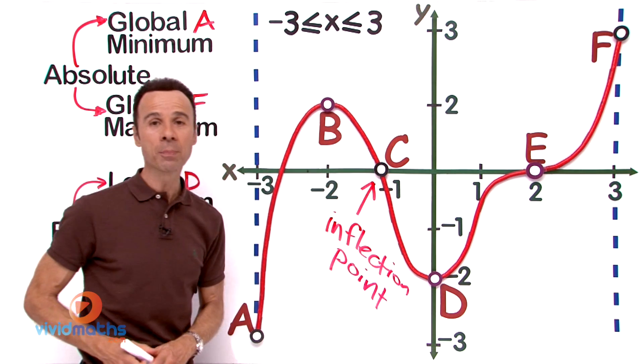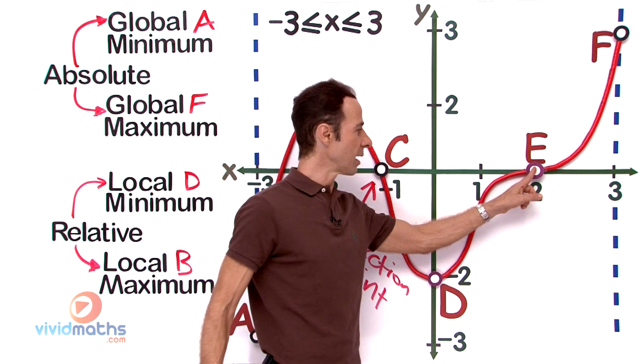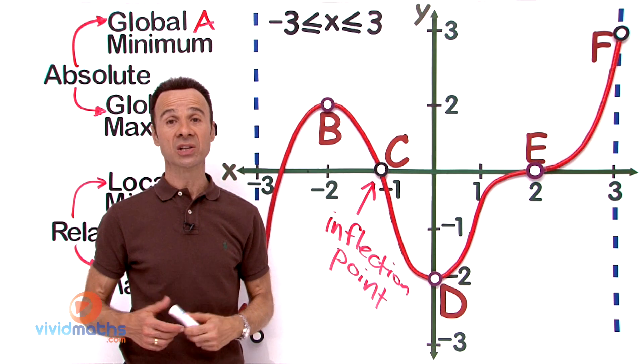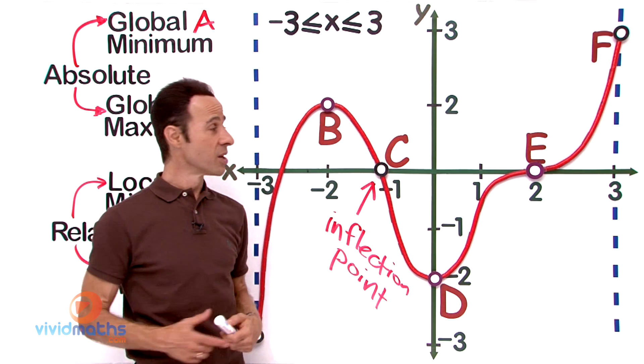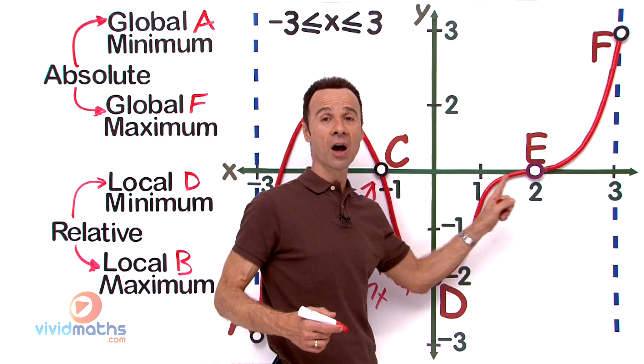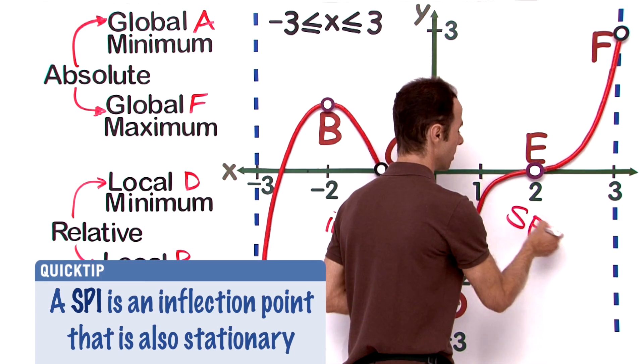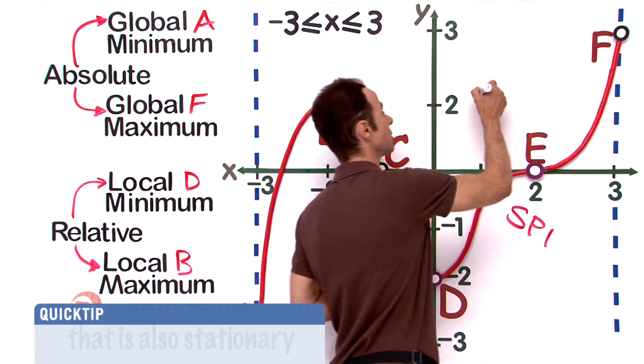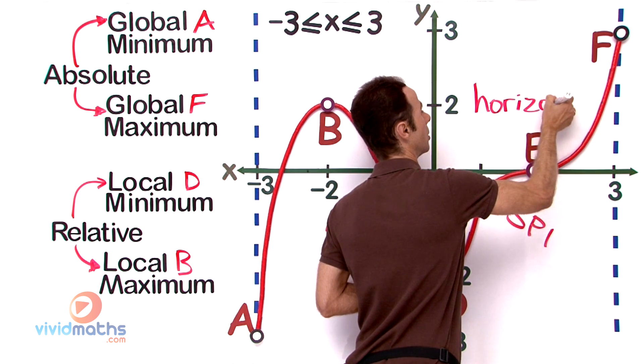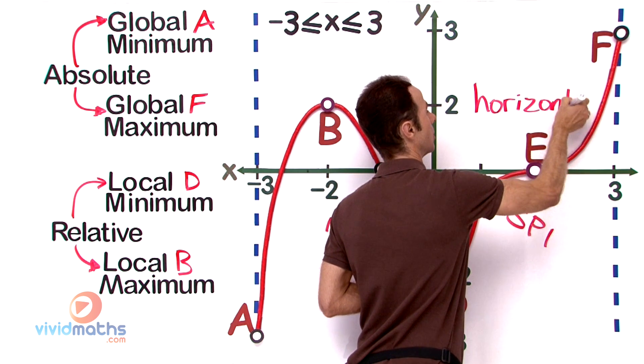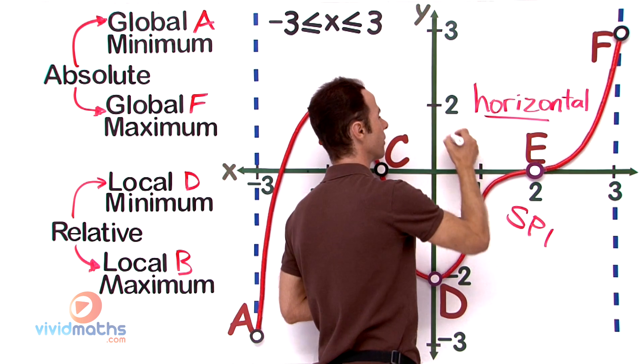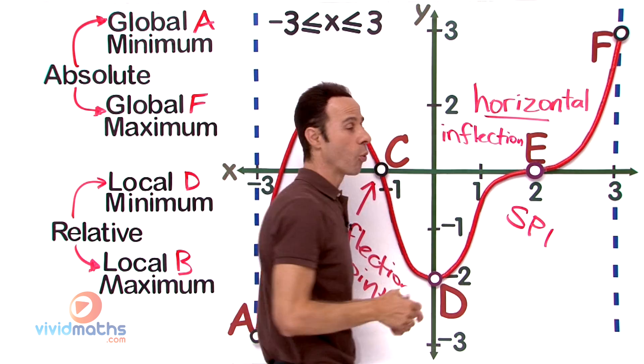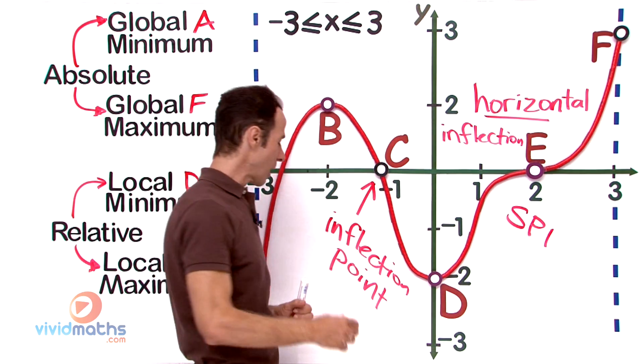Now there is another type of inflection point, and we have it right here. That inflection point, when you get the first derivative, is actually going to be a stationary point. So it is referred to as a stationary point of inflection, or sometimes referred to as SPI—stationary point of inflection. Sometimes it is also referred to as a horizontal point of inflection.